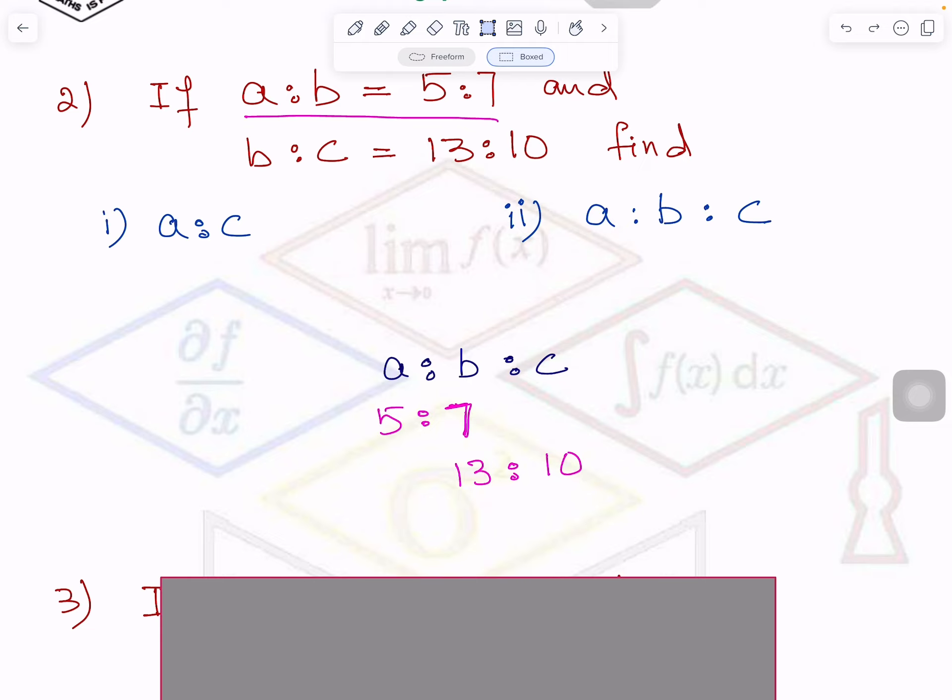So I am multiplying 5 and 7 by 13. So what is 5 times 13? If you don't know by heart, you can multiply like this. I am just using calculator to make it a little faster, but you will use it. So 5 times 13 is 65. And 7 times 13, because I am multiplying both of them by 13, so 7 times 13 will be 91.